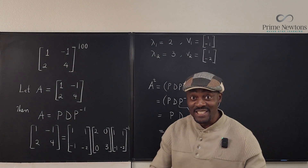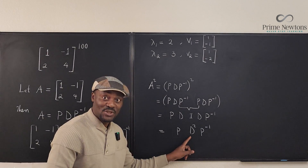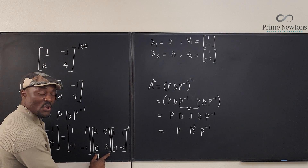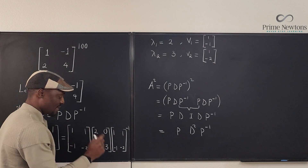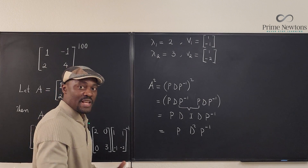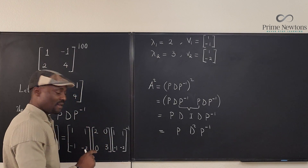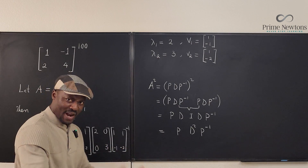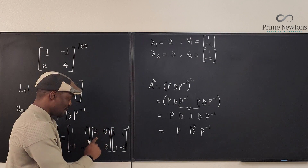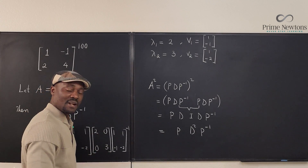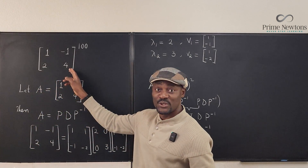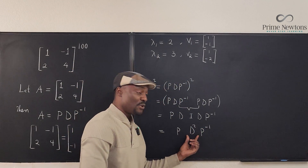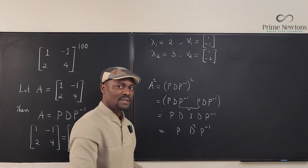It's always easy to raise a diagonal matrix to a power, because all you have to do is raise each diagonal entry to that power. If you raise D to power 10, you just raise each diagonal element to power 10. That's why it's possible to raise the whole matrix to power 100 — you only need to handle these two basic outer matrices P and P⁻¹.